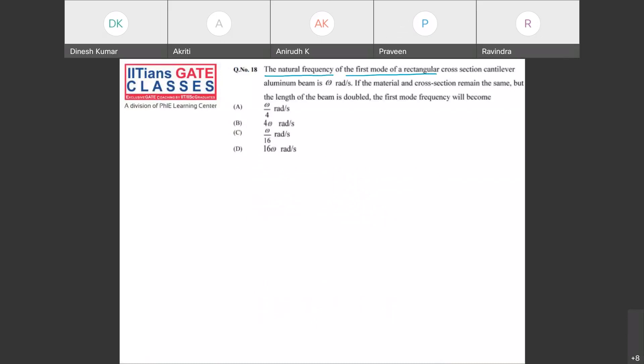What is given: the natural frequency of the first mode of rectangular cross-section cantilever aluminum beam is omega. If the material and cross-section remain same but the length of beam is doubled, the first mode of frequency will become? In yesterday's class we saw they asked the ratio of omega 2 by omega 1, but now what are they asking? What will be omega 2 in terms of omega 1?